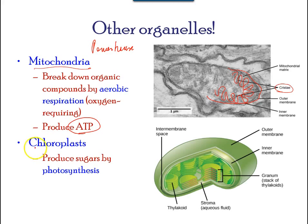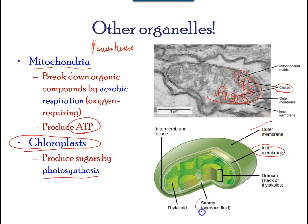Like mitochondria, chloroplasts also have their own DNA and ribosomes. Chloroplasts function in photosynthesis and can be found in eukaryotic cells such as plants and algae. In photosynthesis, carbon dioxide, water, and light energy are used to make glucose and oxygen. Plants are autotrophs and are able to make their own food, whereas animals are heterotrophs and must rely on other organisms for their food source. Like mitochondria, chloroplasts have outer and inner membranes, and within the space enclosed by the inner membrane is a set of interconnected and stacked fluid-like membrane sacs called thylakoids.